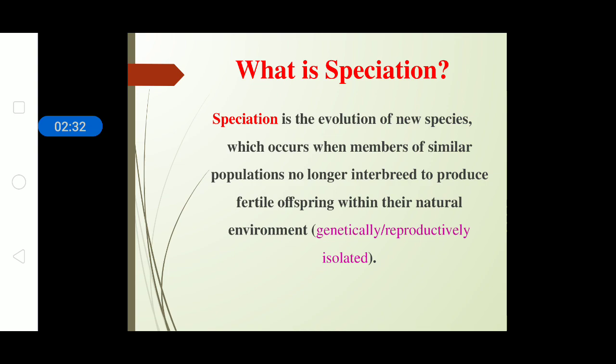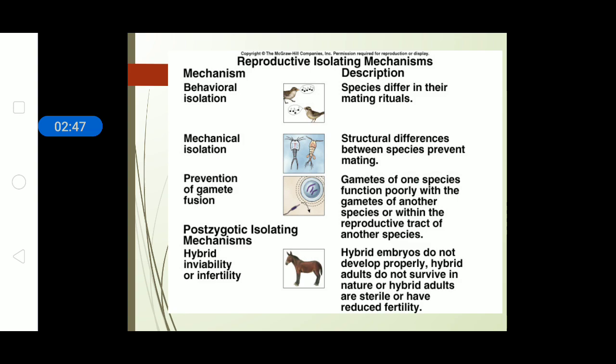Speciation is the process by which a new species evolves over a period of time. Members of the new species will have similar attributes and will be reproductively isolated from other species. For speciation to occur, one of the most important required factors is reproduction. Isolating mechanisms are barriers that hinder or stop the process of reproduction.